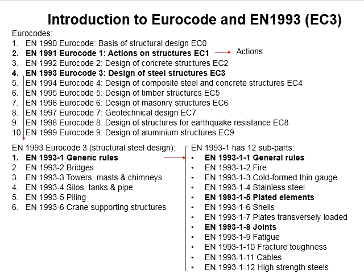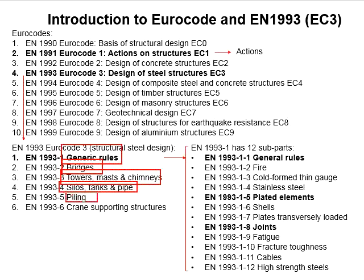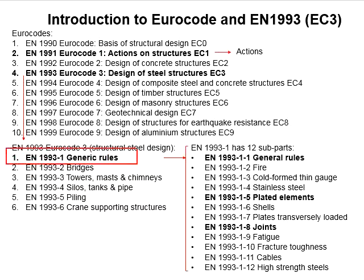As far as steel structures are concerned, Eurocode 3 is used and needs to be used together with Eurocode 1 for the actions. It is all on the basis of structural design in Eurocode 0. Within Eurocode 3, there are six main parts which cover the general rules, bridges, towers, silos, piles, and crane supporting structures. For common applications, we use Eurocode 3 Part 1 more extensively, which covers the general rules of the design of structural steel.